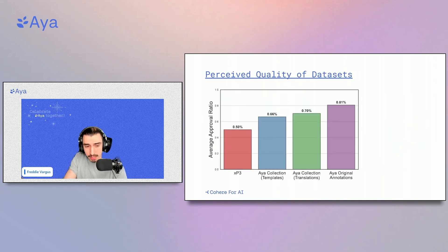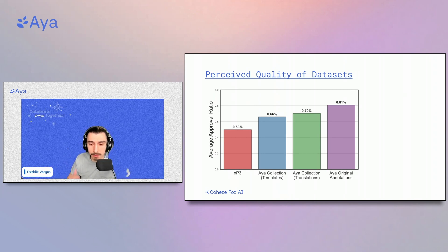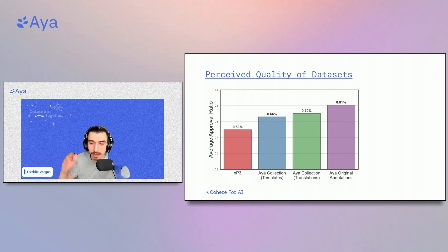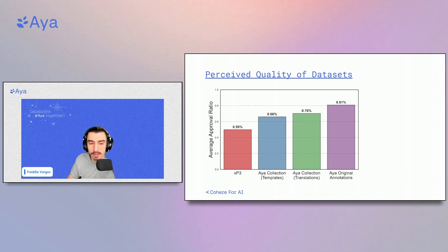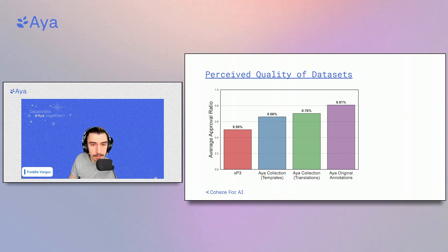Towards the end of our data collection efforts, we looked at the average approval ratio, which is the ratio of thumbs up compared to the total number of thumbs given. We learned that original annotations that were contributed were actually perceived to be of the highest quality compared to the existing and augmented datasets that we surfaced to users.